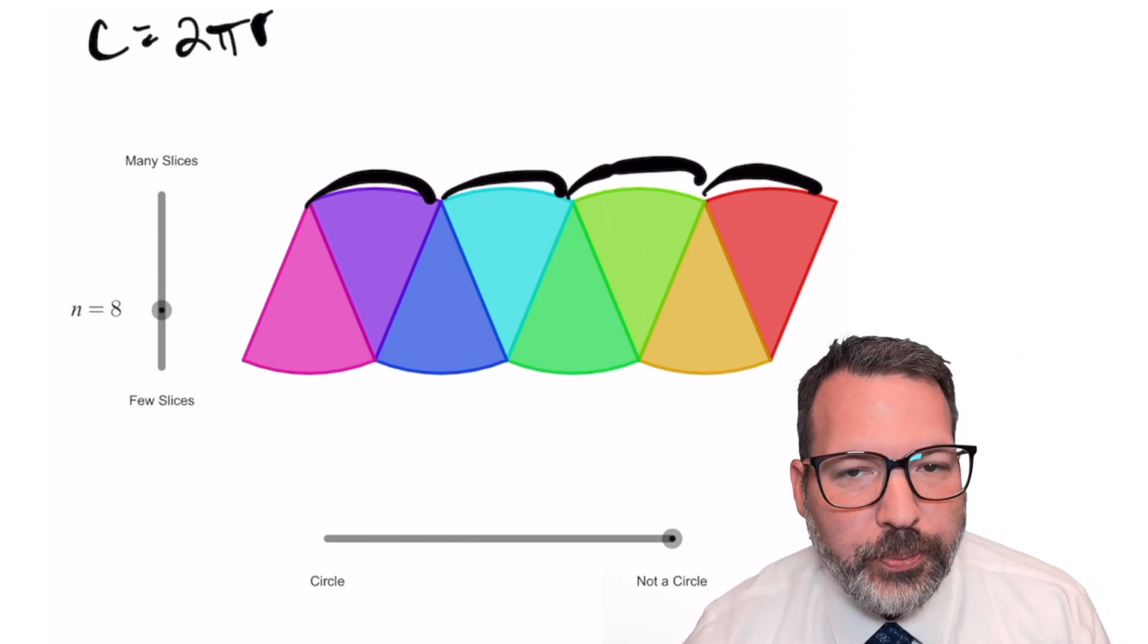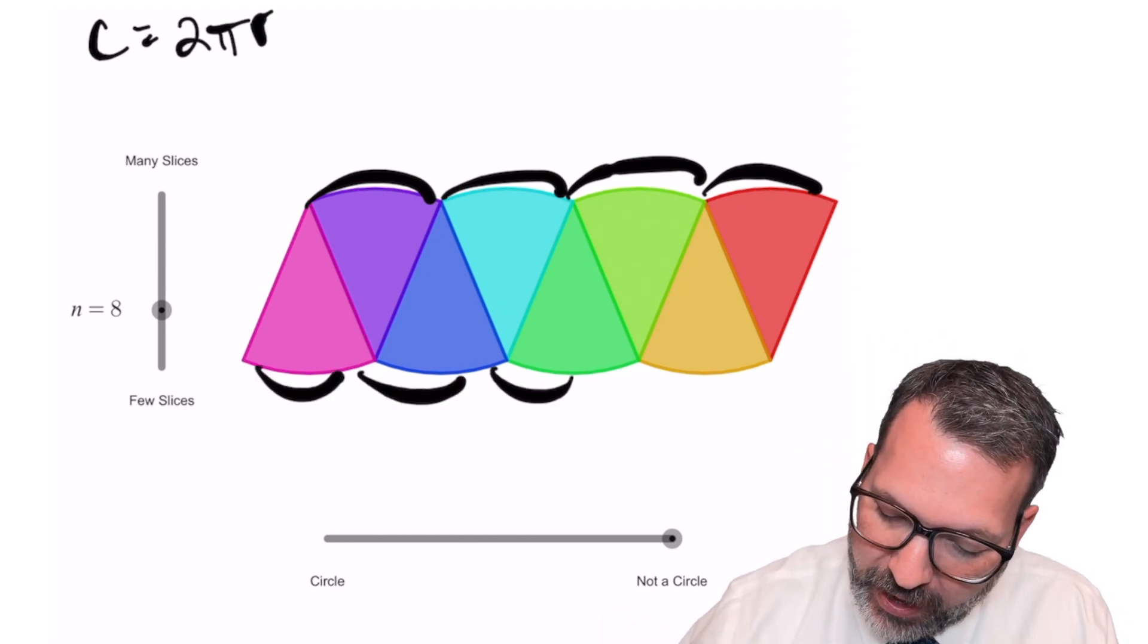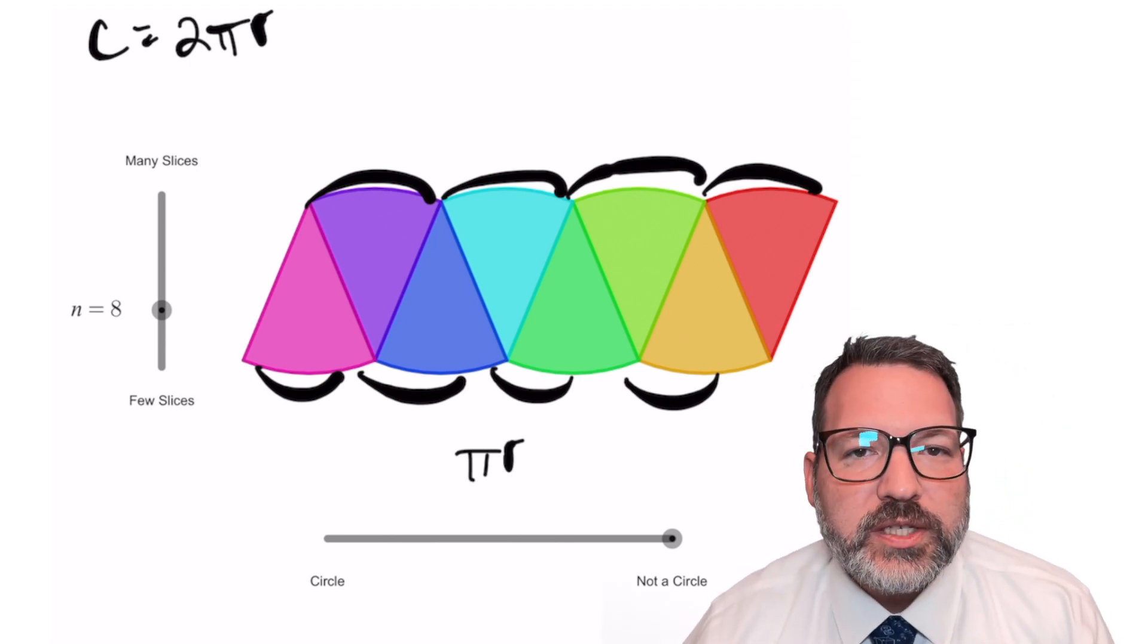The circumference of the circle, of course, is 2πr, so each half of that would be πr. So we know the base of this parallelogram.